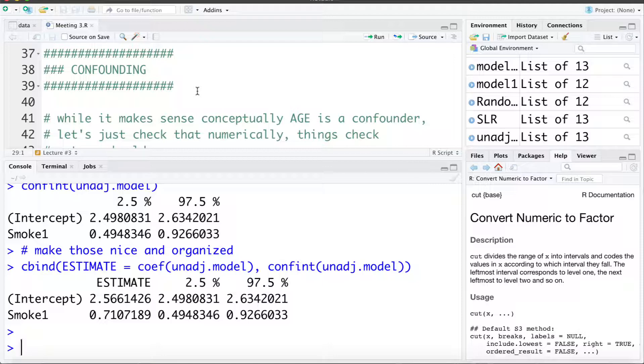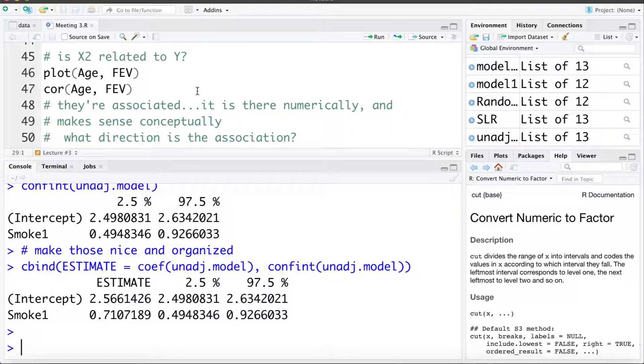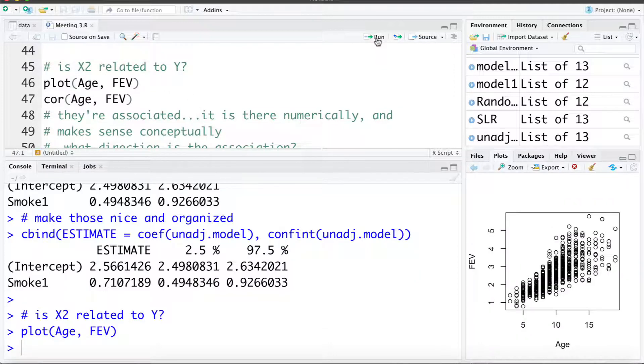So now let's check numerically if age seems to be behaving like a confounder. The first thing we can do is check if age is related to the outcome of FEV. If we look at a plot we can see there's a pretty strong association there. As age increases, lung capacity increases as we'd expect. We can calculate the correlation as well to quantify the strength of that association.